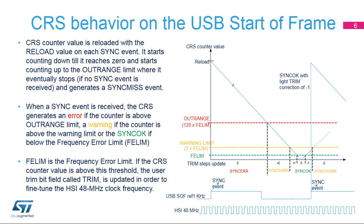A sync event received when the counter is below the outrange will eventually fine-trim the HSI 48, depending on the phelim 7-0 value. If the CRS counter value is below the phelim limit, no trim actions are taken.